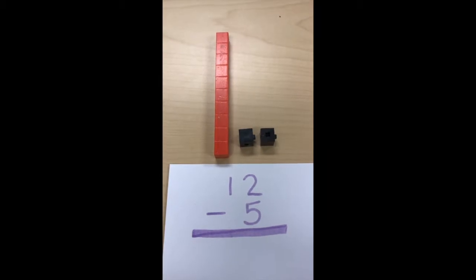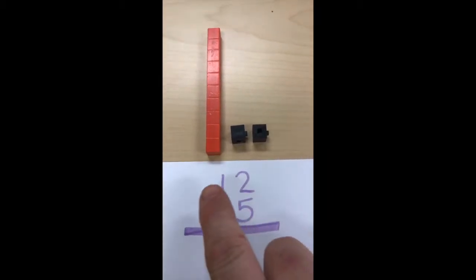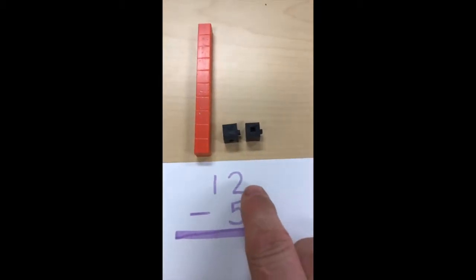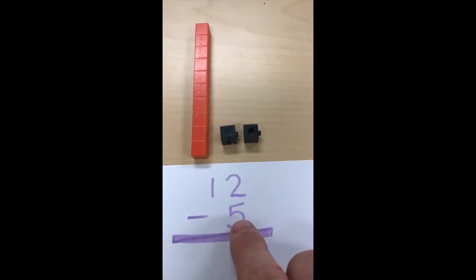Let's subtract 5 from 12 using concrete materials. Here we have 12, one 10, two additional ones that are black here, and we're going to take away 5.